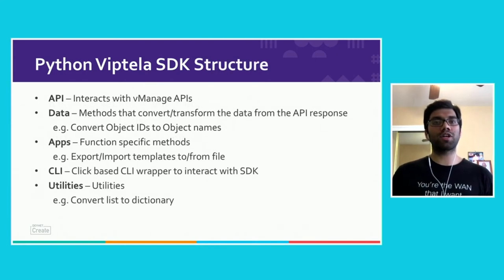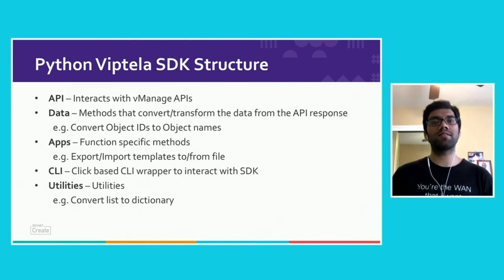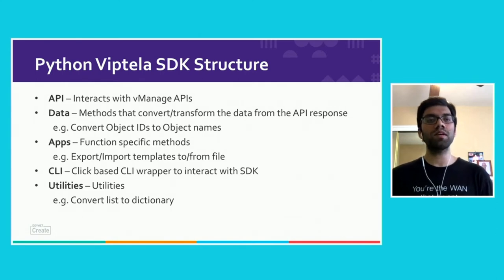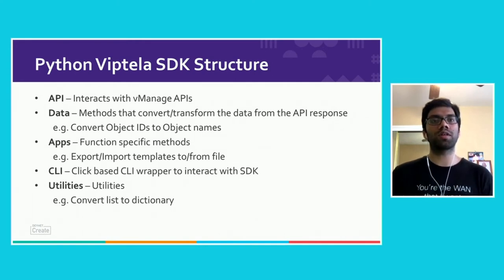Let's look at the high-level structure of the SDK. We have an API directory that uses raw vManage APIs to communicate with the vManage instance. The data directory has functions to convert unique identifiers like template ID to a template name. The apps directory has Python code for use cases like exporting and importing templates and policies. The CLI directory has code for the click-based CLI wrapper, and the utility directory has various utilities for converting lists to dictionaries related to templates and policies.